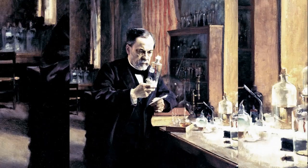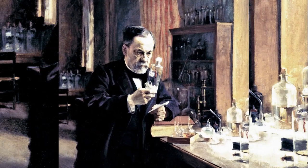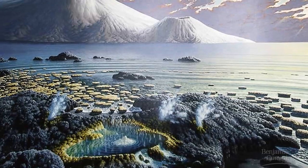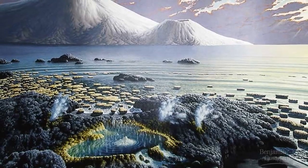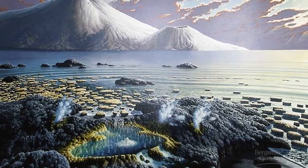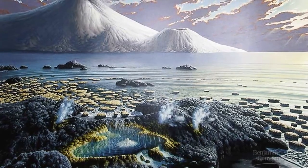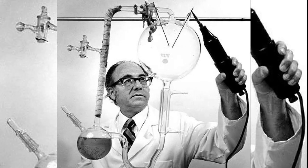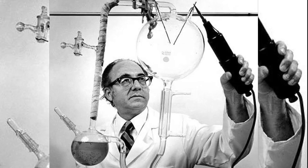The problem is, spontaneous generation was proven to be impossible by Louis Pasteur in 1864. In an effort to distance their exercise in futility from spontaneous generation, they redubbed it abiogenesis. Well, you can redub it all you want, but you're still trying to create life from non-life, which has already been disproven. And this is why all experiments like the Miller-Urey experiment failed to create life.